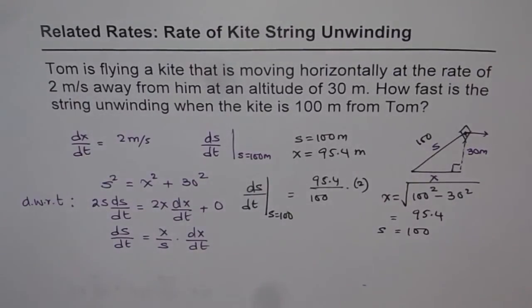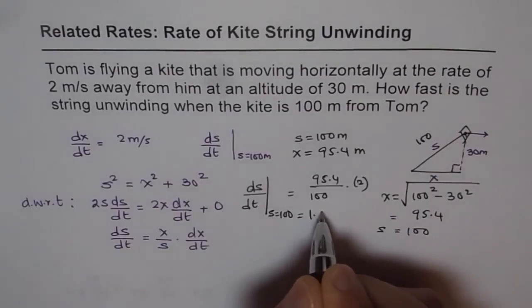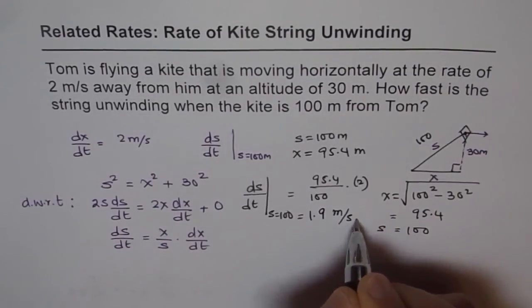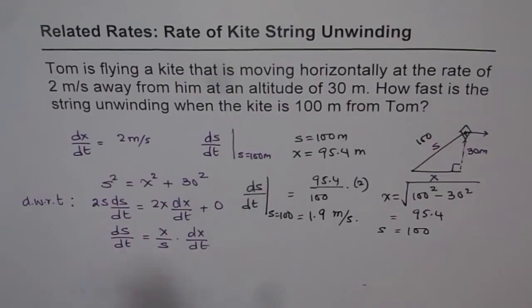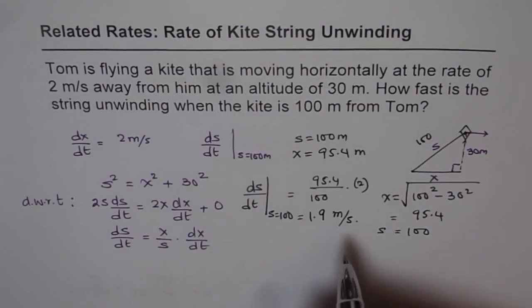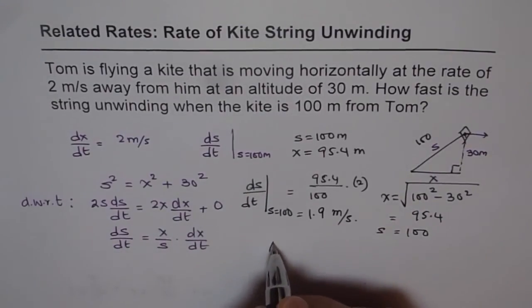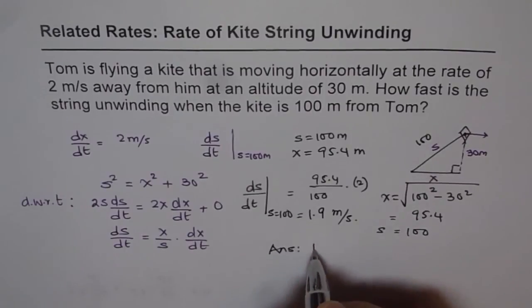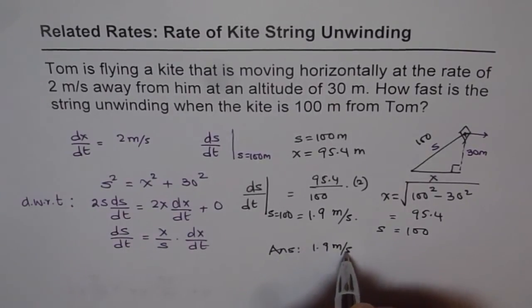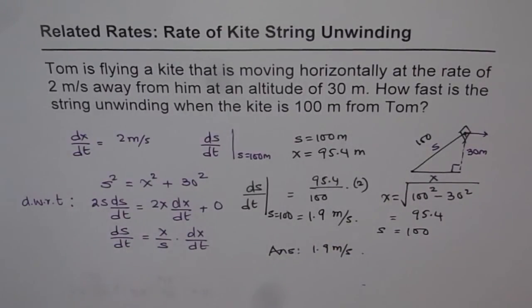So we get 95.4 divided by 100 times 2. So it equals approximately 1.9 meters per second. So the string is unwinding at the rate of 1.9 meters per second. So that is our answer, 1.9 meters per second. Thank you.